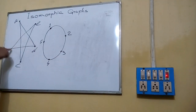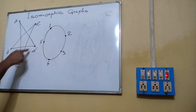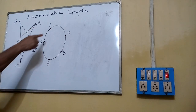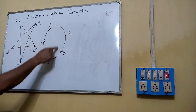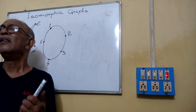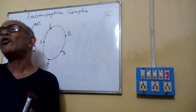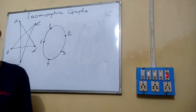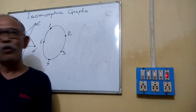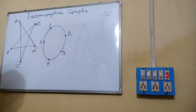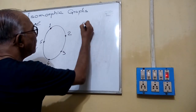Now check the degree of each vertex. The degree of each vertex is 2 here, and here also the degree of each vertex is 2. Still, there is a possibility that the two graphs are isomorphic, but we cannot guarantee unless we prove a correspondence between the vertices.